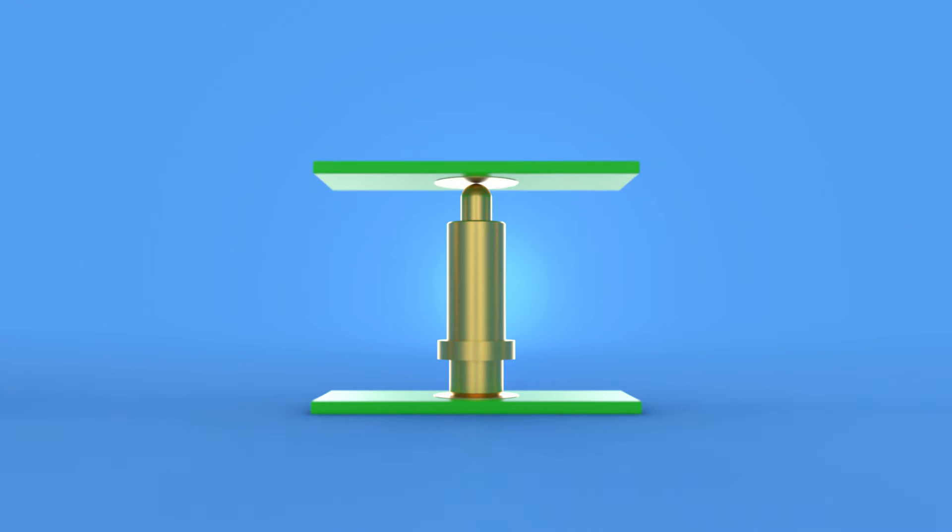Number four: Since one spring-loaded pin can replace two parts in a connection, there are fewer parts to spec, purchase, track, and assemble.